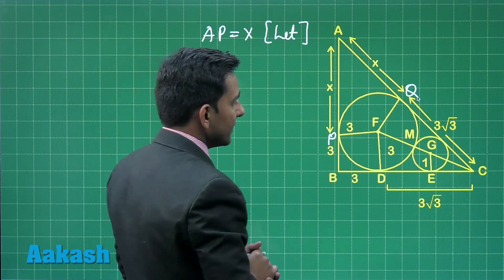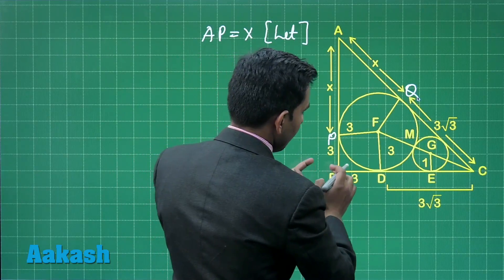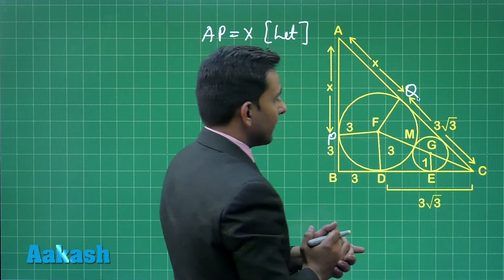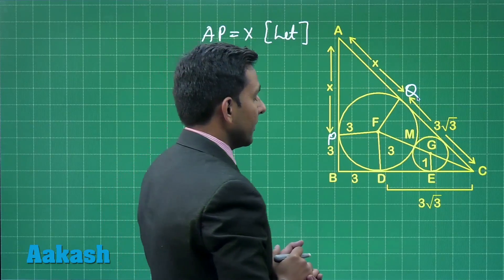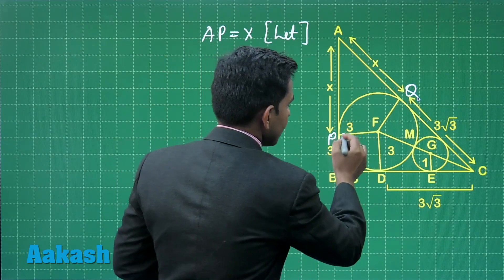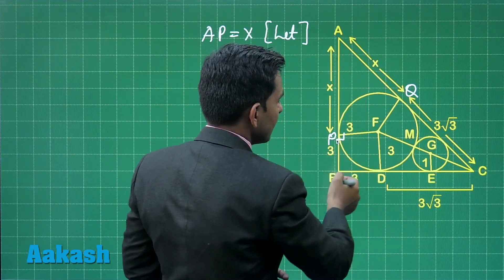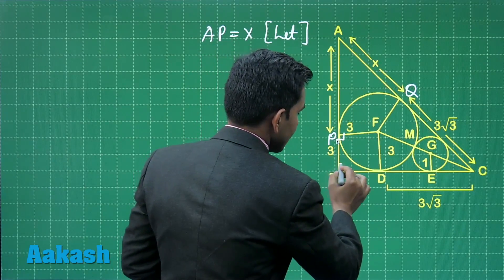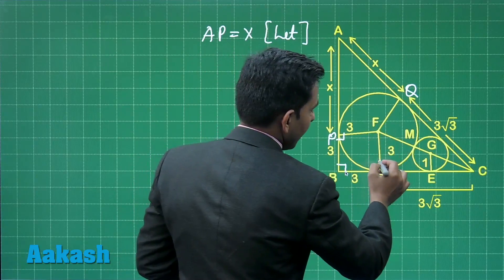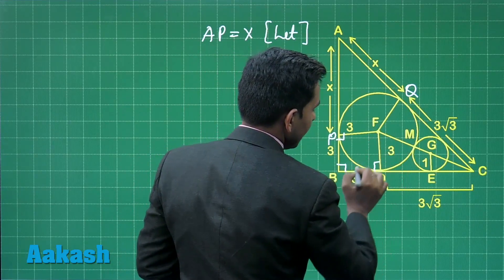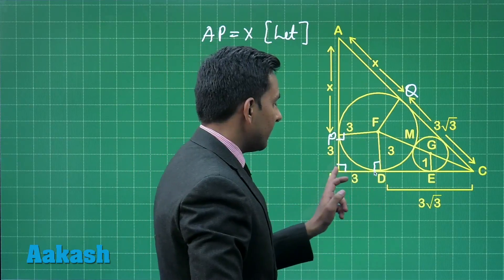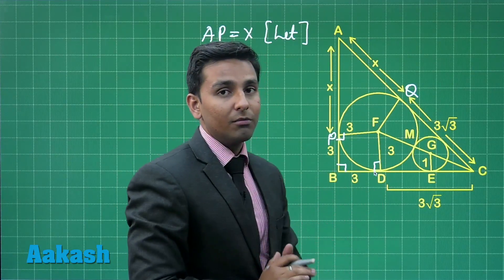The lengths of PB, BD, PF, and FD are each equal to 3 centimeters because the radius of the larger circle is 3 units. Angle at B is 90 degrees since AB is tangent to this circle, and the measure of angle FDB is also 90 degrees. This means P, F, D, B form a square.